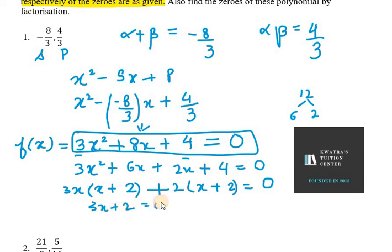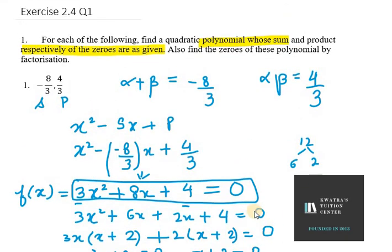And another one is x plus 2 equals 0. So here are our two zeros, that is x equal minus 2 over 3 and x equal minus 2. This is the solution for the first part. Thank you for watching this video.